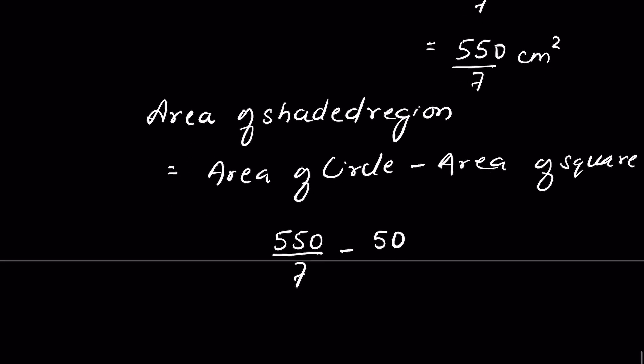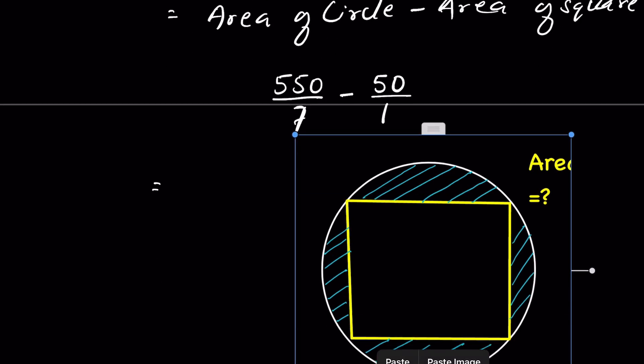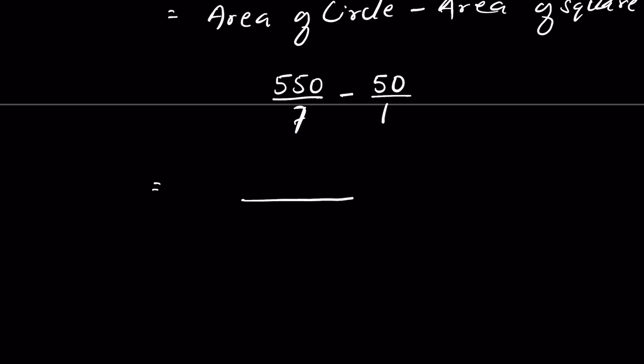Now, how do we subtract a whole number from a fraction? We convert whole number into a fraction by putting 1 as the denominator. Now, 7, 550 minus 7 times 50 is 350. So 200 upon 7 cm square. This is the area of the shaded region.